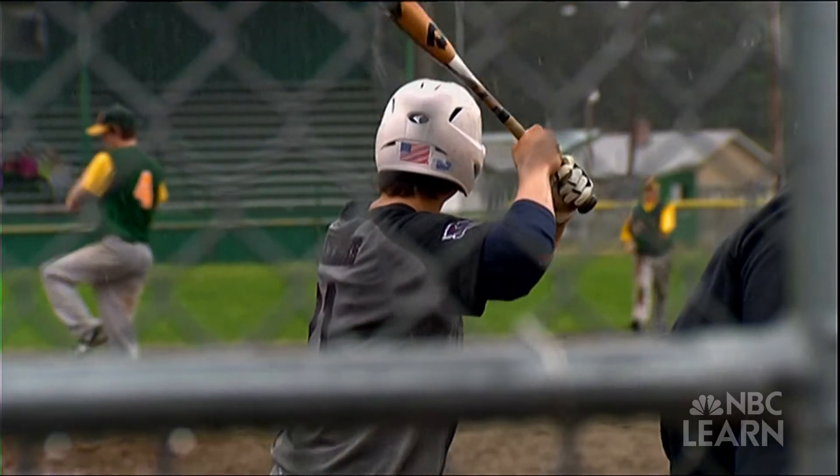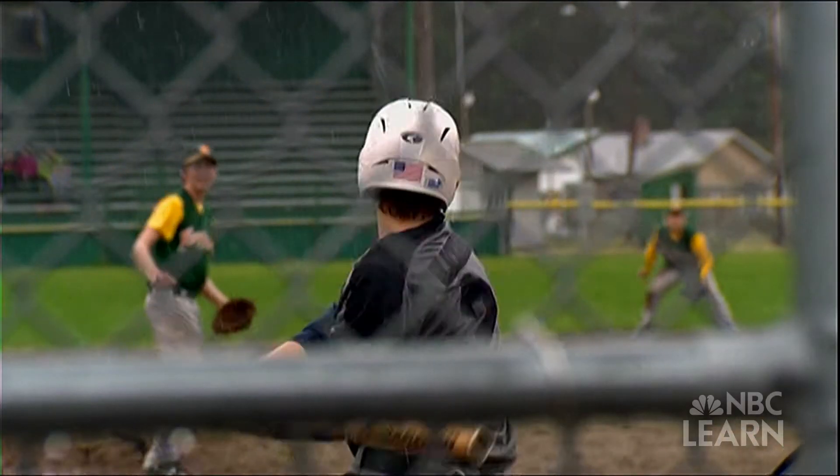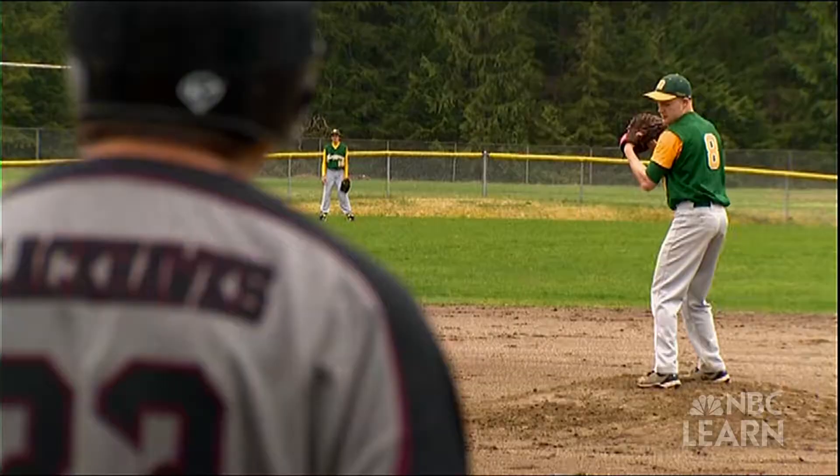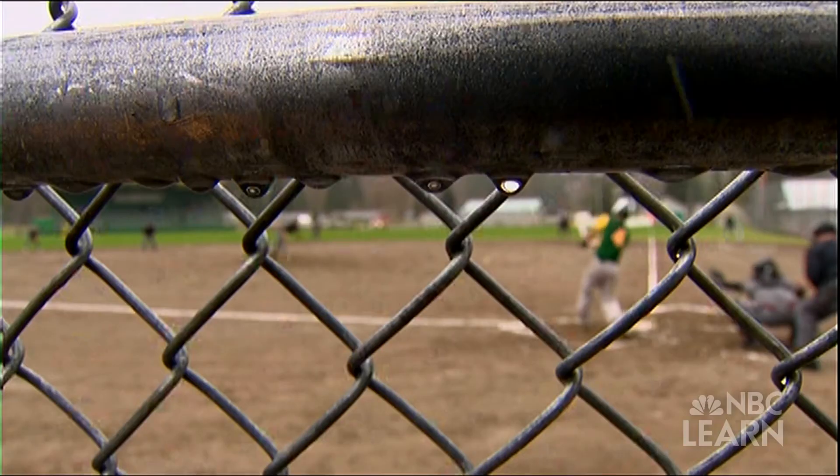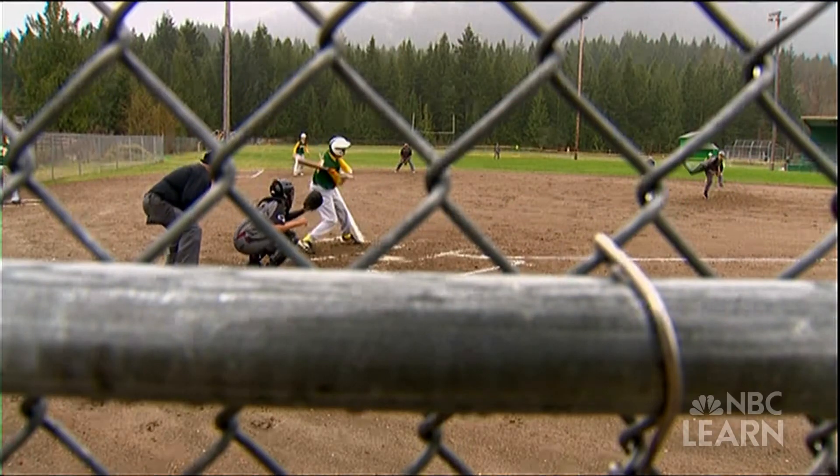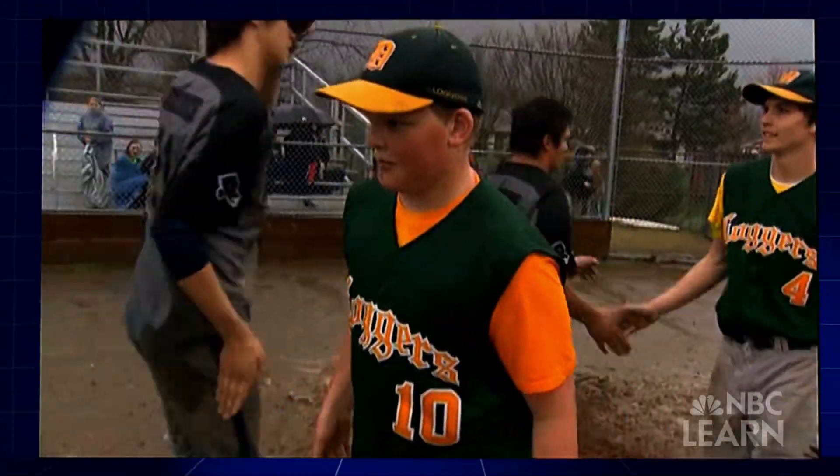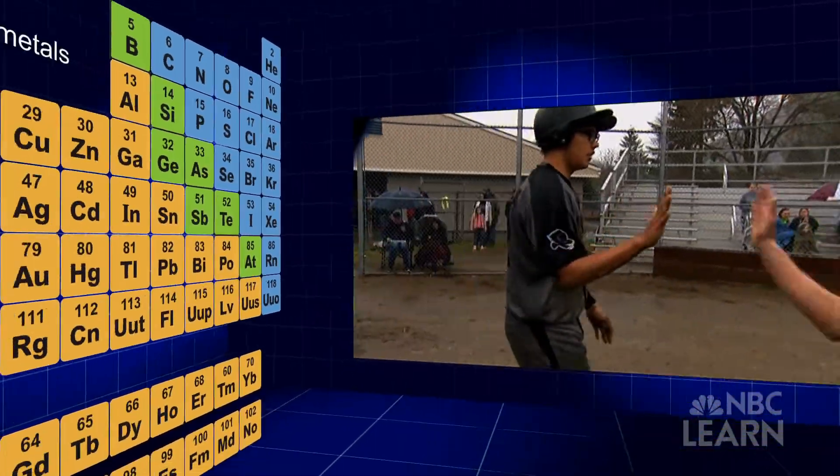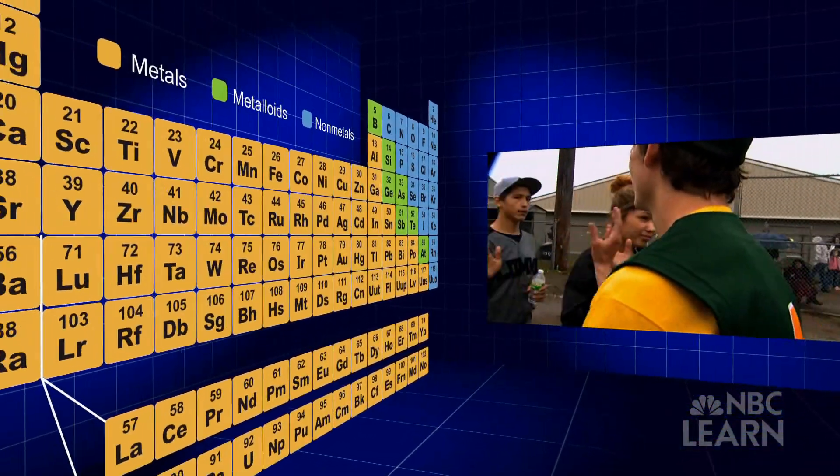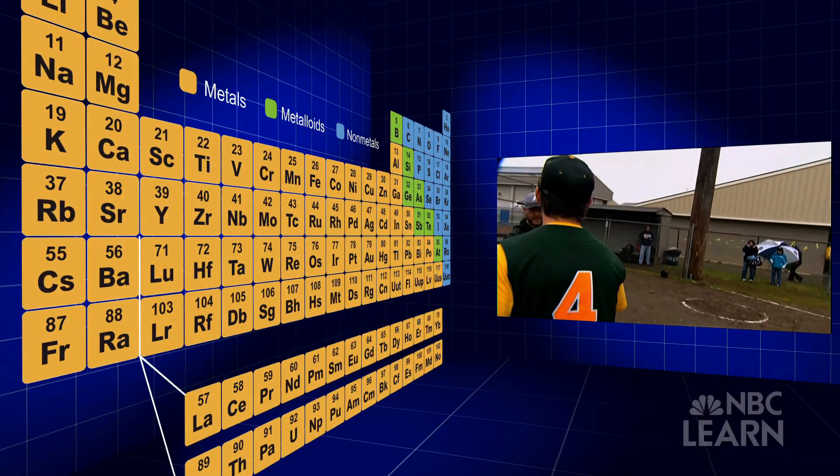So, let's assume it's your job to design a new type of baseball bat. You want to use a material that's lightweight, yet strong, something that won't break like wooden bats do. Consult the periodic table and make a list of the elements you might consider using to construct such a bat.